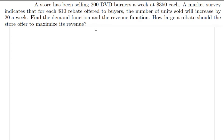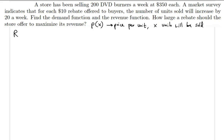The first thing to realize is that P of X will represent price per unit, and X units will be sold. The revenue function R of X equals X units sold times price per unit — that is, X times P of X. This is the total revenue.